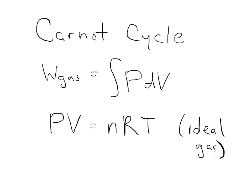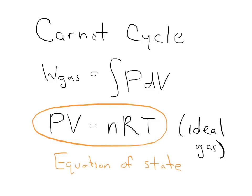This whole equation, PV is equal to nRT, is something called the equation of state of the gas. The reason that it's called the equation of state is that it relates all of the thermodynamic properties that we can measure — which is to say the pressure, the volume, and the temperature — together.